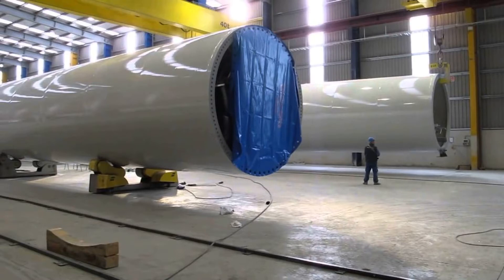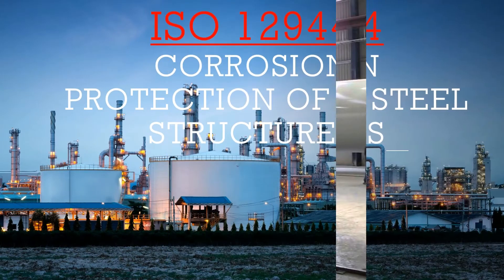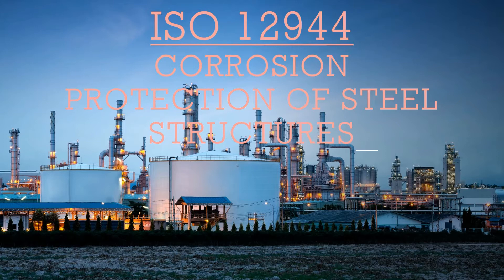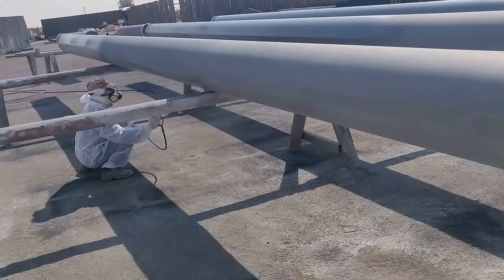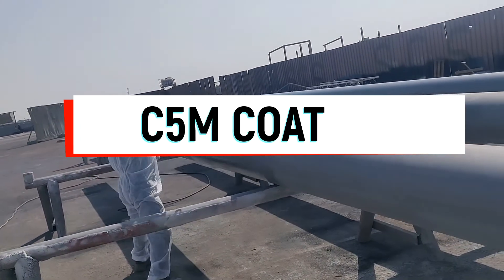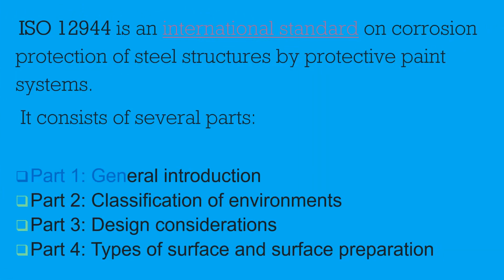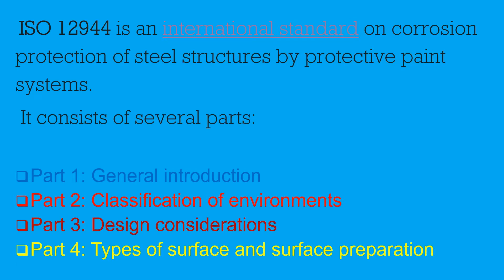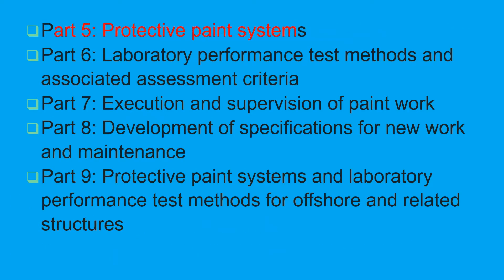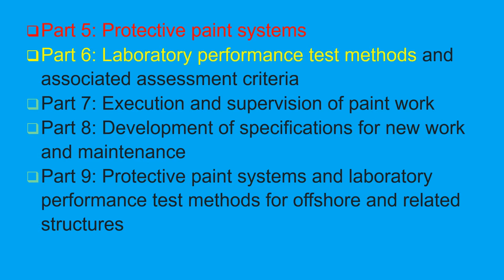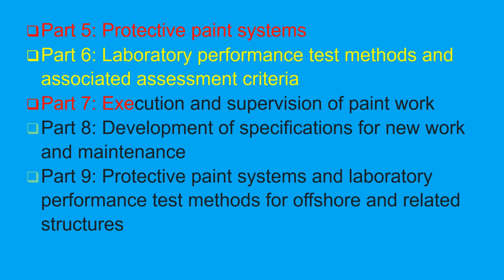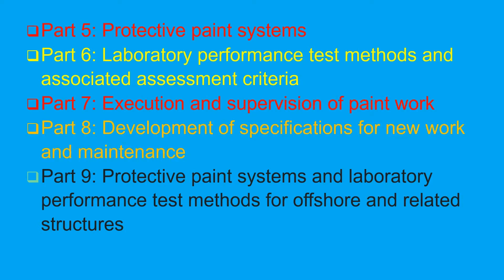ISO 12944 is an international standard on corrosion protection of steel structures by protective paint systems. It consists of several parts: Part 1 general introduction, Part 2 classification of environment, Part 3 design consideration, Part 4 type of surfaces and surface preparation, Part 5 protective paint systems, Part 6 laboratory performance test methods, Part 7 execution and supervision of paint work, Part 8 development of specifications, and Part 9 protective paint systems and laboratory performance test methods for offshore and related structures.